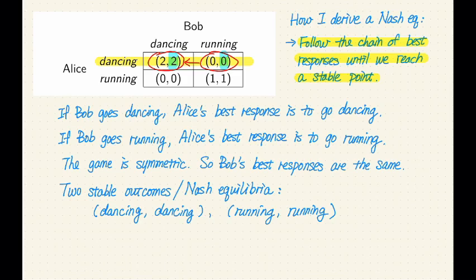Now let's see if we can improve Alice's strategy in a similar way. So currently, we are at this left strategy profile and let's fix what Bob is doing. So let's suppose Bob is sticking to going dancing and can Alice improve her strategy? Well, in the current strategy profile, Alice is going dancing and she gets utility of two. If she switches to going running, she gets a utility of zero.